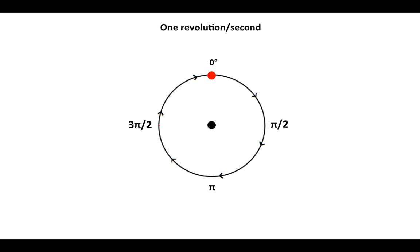One revolution per second will be 2π radians per second, and watch this. In one second, 2π radians, so that red dot shows the rotation of the wheel. Here it is again, one revolution in one second.